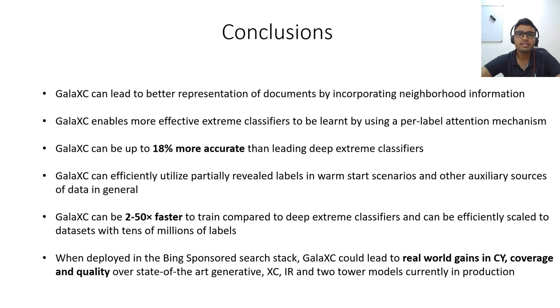To conclude, Galaxy is an algorithm for extreme classification which tries to learn better document representation by incorporating neighborhood information with the help of a joint graph over documents and labels. It further tries to learn better classifiers using a per-label attention mechanism. These contributions allow Galaxy to be up to 18% more accurate than leading deep extreme classification algorithms, with Galaxy performing particularly well for data scarce tail labels. It is further demonstrated that Galaxy can efficiently utilize partially revealed labels in warm start scenario and other auxiliary sources of data in general.